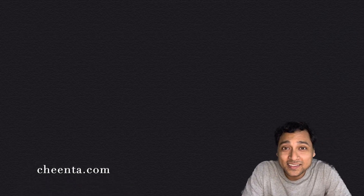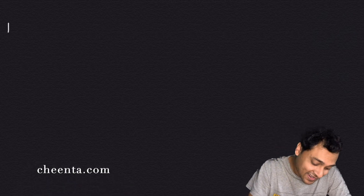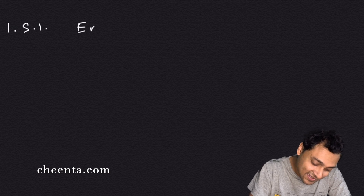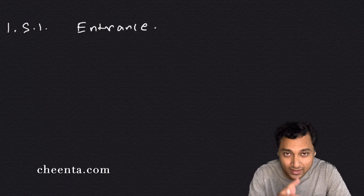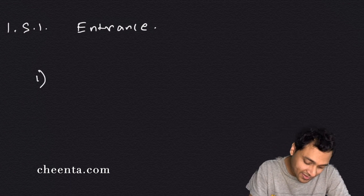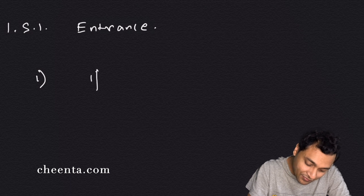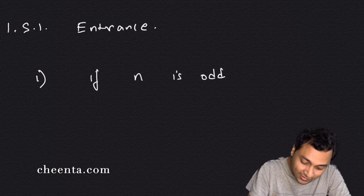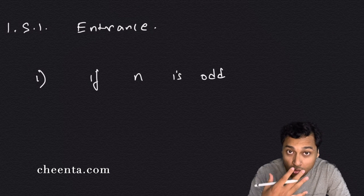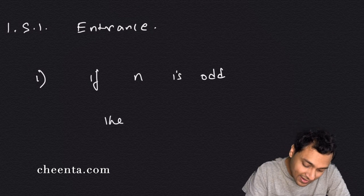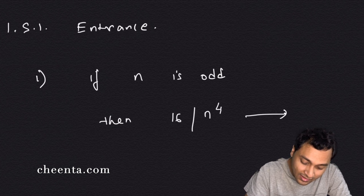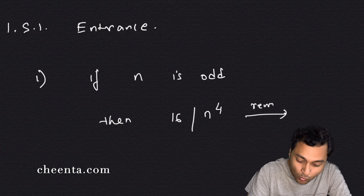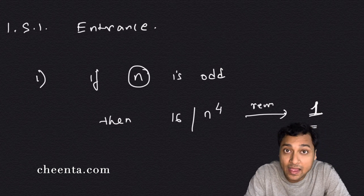Hello. This problem is from ISI Entrance and it is a very simple but elegant problem from number theory. It has two parts. The first part is: show that if n is odd, then 16 divides n to the power 4 with remainder 1.